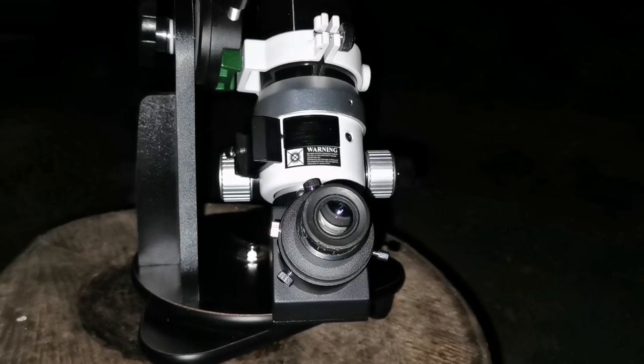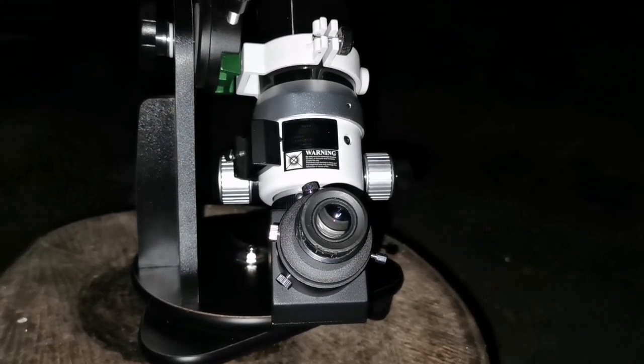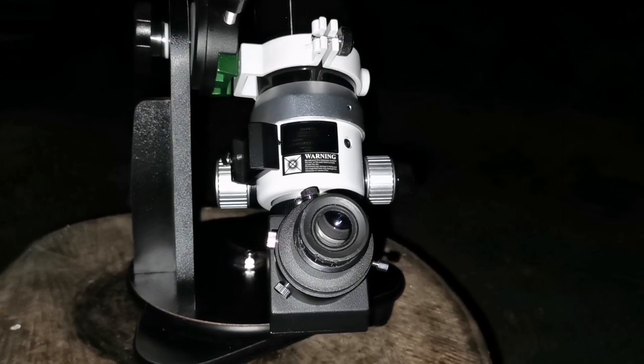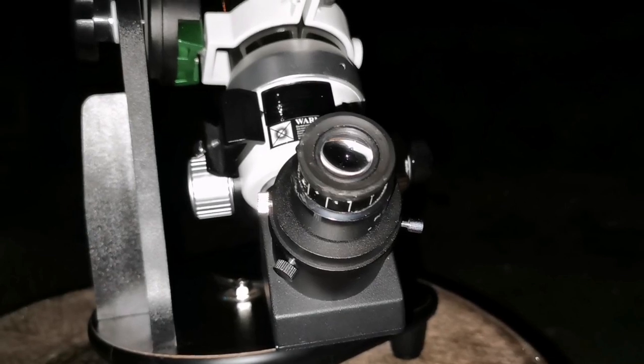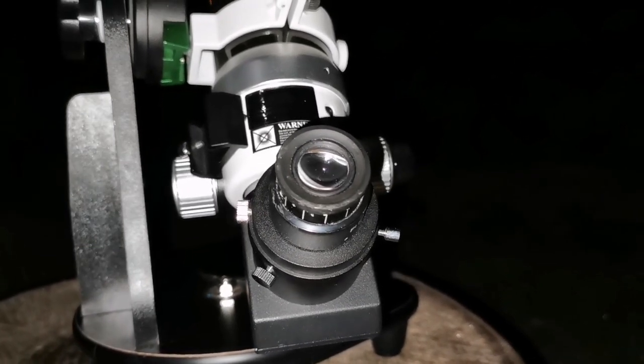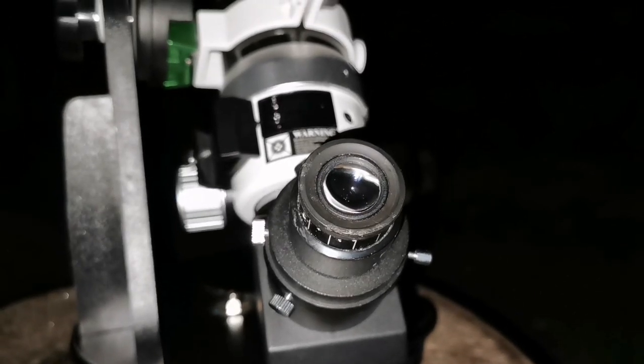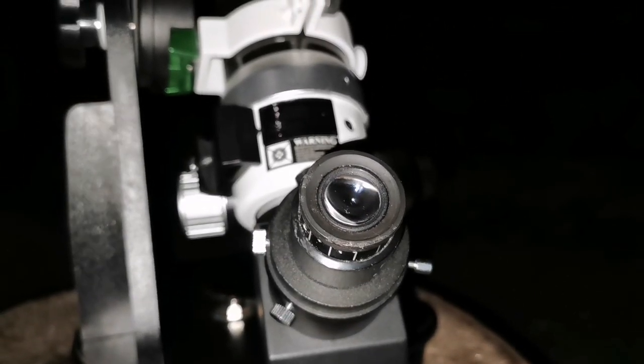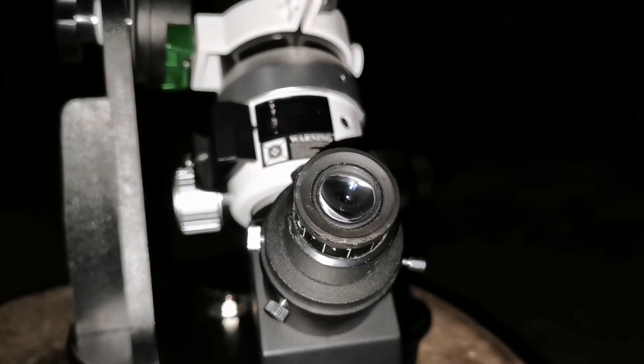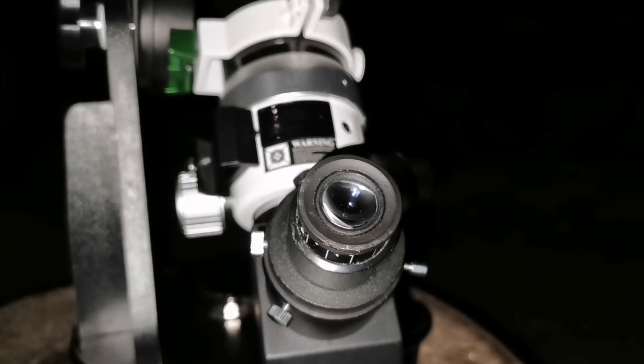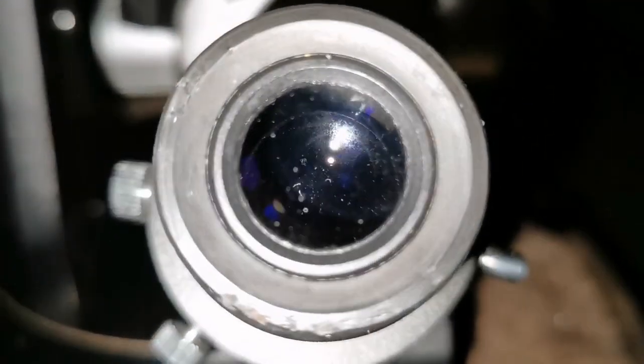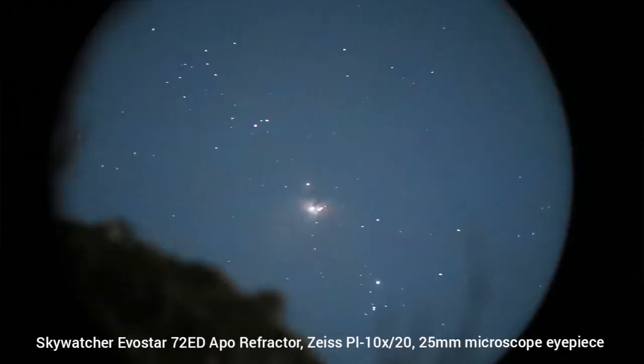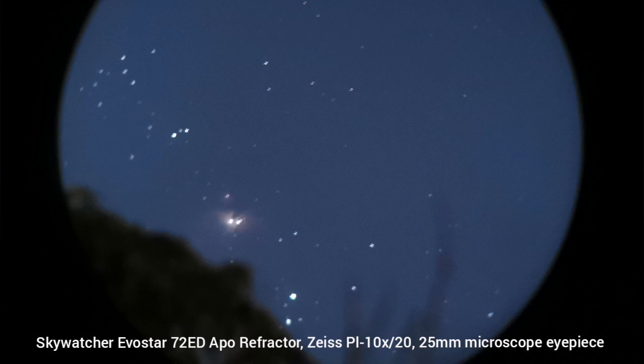This is the Skywatcher ED-72 Apochromatic Telescope that I'm using, and this is the Zeiss 25mm 57 degrees eyepiece. This is the Zeiss PL 10x20. Let's see how is the view through this telescope. I will take an astrophoto like this.